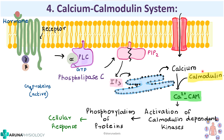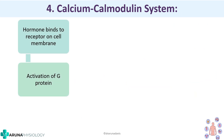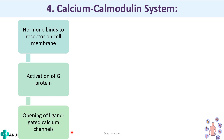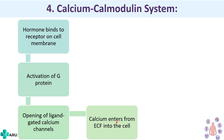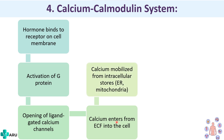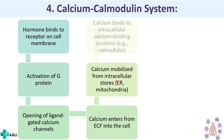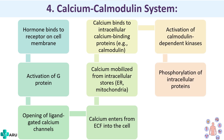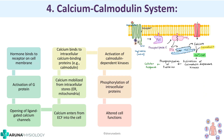In flowchart form: hormone binds to receptor on the cell membrane → G protein activation → opening of ligand-gated calcium channels (calcium enters from ECF into the cell), and calcium is mobilized from intracellular stores (endoplasmic reticulum or mitochondria), also via the IP3 system. Calcium then binds to intracellular calcium-binding proteins like calmodulin, causing activation of calmodulin-dependent kinases, phosphorylation of intracellular proteins, and cellular response.